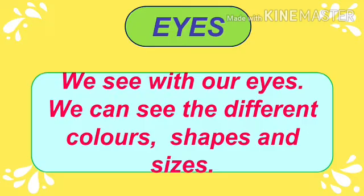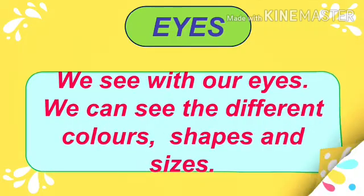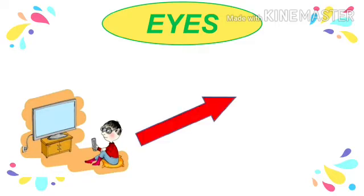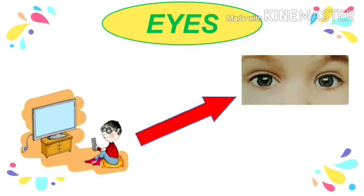See in the picture — a boy is watching television. With the help of what? Yes, with the help of his eyes. The next sense organ is nose.